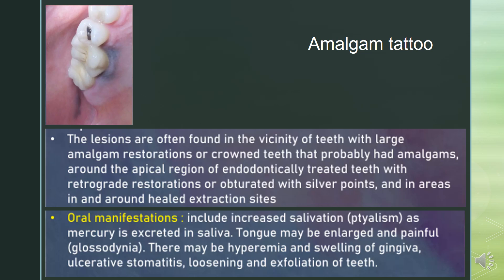The lesions are often found in the vicinity of teeth with large amalgam restorations or crowned teeth, around the apical region of endodontically treated teeth with retrograde restorations or obturated with silver points, and in and around healed extraction sites.